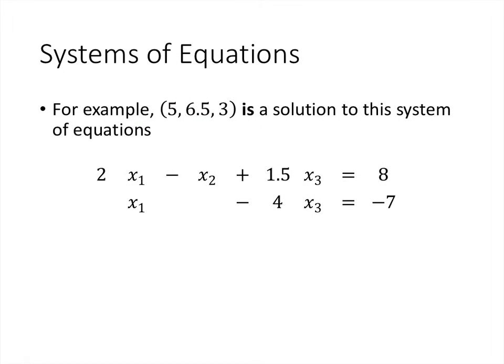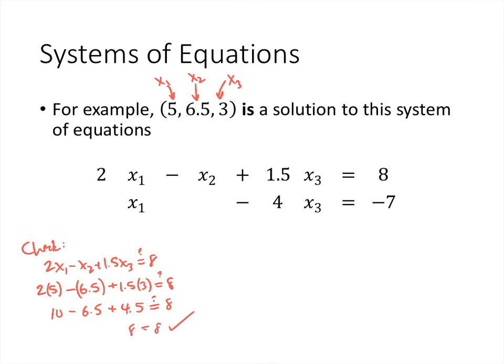Here we have something that is a solution. Again, the first number in the triple is the value of x1, the second number is the value of x2, the third number is the value of x3. For us to check this, we've got to check all of the equations. So 2x1 minus x2 plus 1.5x3, does that equal 8? When we plug in we get 2 times 5 minus 6.5 plus 1.5 times 3. 2 times 5 is 10, minus 6.5, 1.5 times 3 is 4.5, and that does in fact work out to be 8. But that doesn't tell us this is a solution yet, we've got to check the second equation.